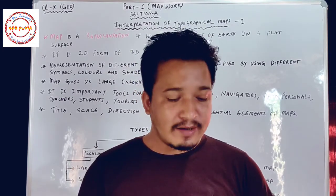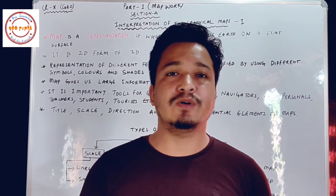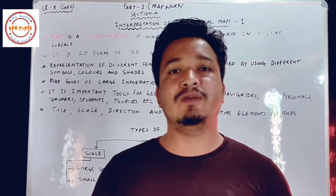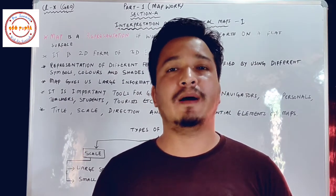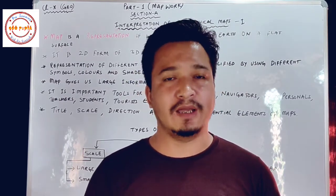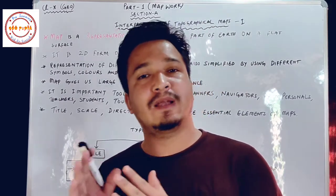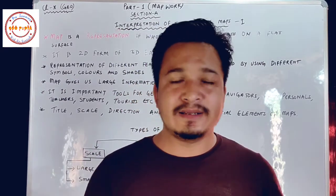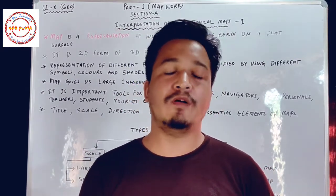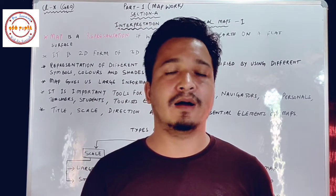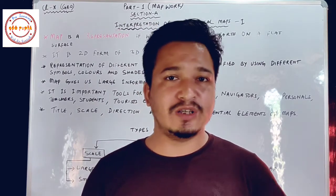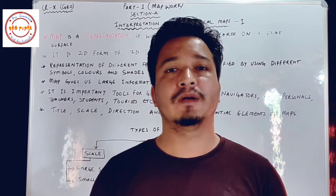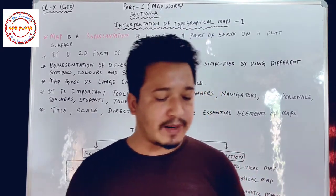From Part 1, that is the practical part, there will be questions of 30 marks in your examination. In Section A, we will learn about topographical maps prepared by the Survey of India. In Section B, we will learn the map of India. This part consists of 30 marks.